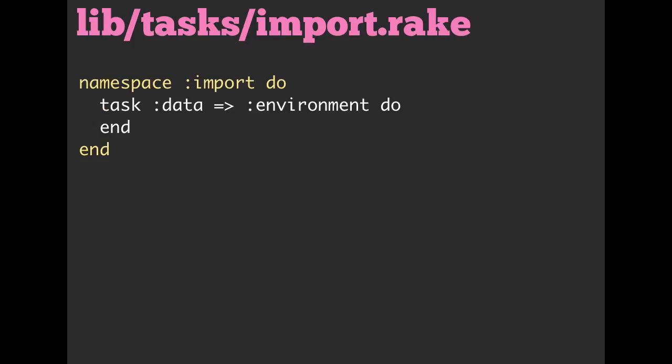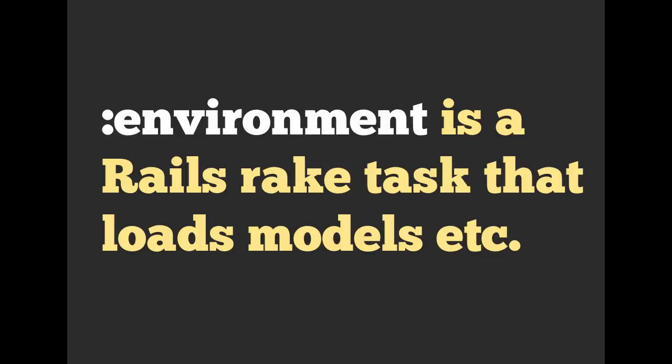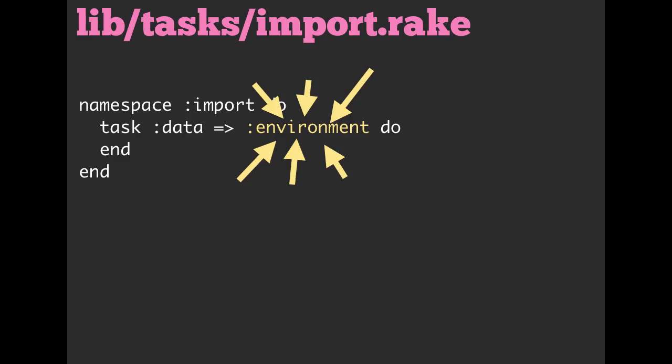Once I've done that, I can then add a task into my Rake file, and the name of this task is data. Note that we do have data hashrocket environment. What this is saying is that before we run the data task, we need to run the environment task. You might wonder — there's no task named environment visible here. Well, environment happens to be a Rake task that Rails gives us, and it's going to load all of our models and everything we'd normally have access to in a Rails console. If you don't run this task before running your task, you won't have access to those models, ActiveRecord, and all the good stuff Rails loads for us. So data hashrocket environment means: run environment before we run data.